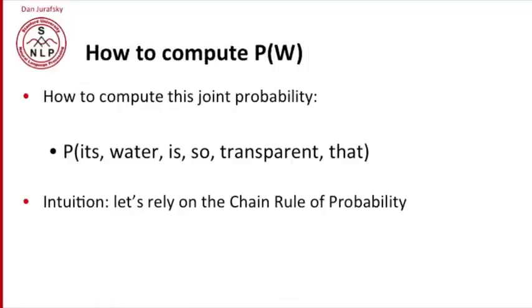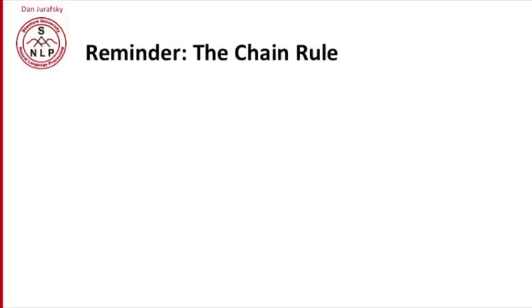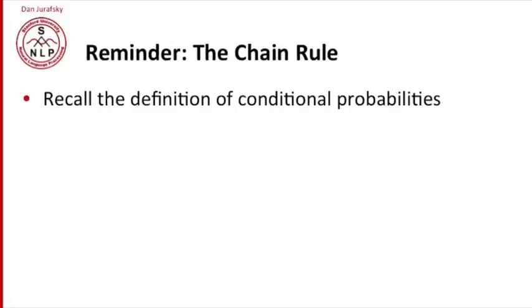So how are we going to compute this joint probability? We want to compute, let's say the probability of the phrase, its water is so transparent that. And the intuition for how language modeling works is that we're going to rely on the chain rule of probability. Just to remind you about the chain rule of probability, let's think about the definition of conditional probability. So P(A|B) equals P(A,B) over P(B).